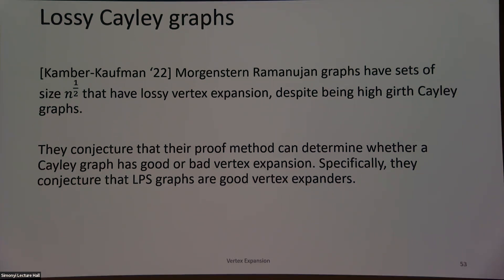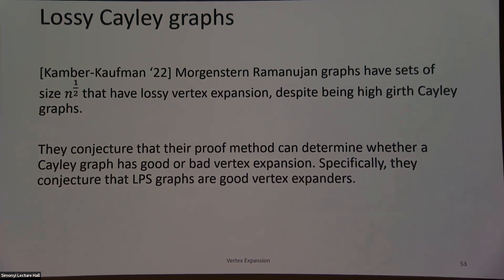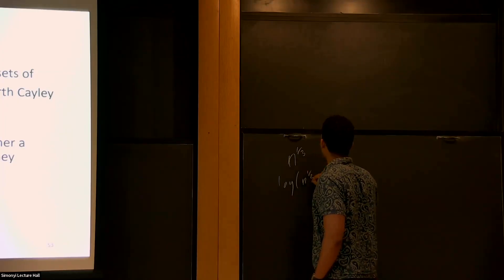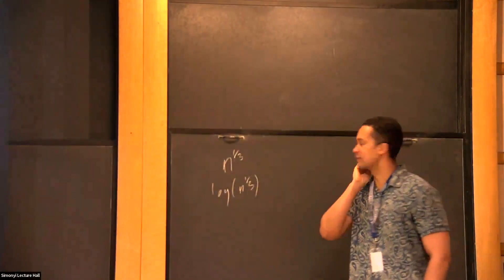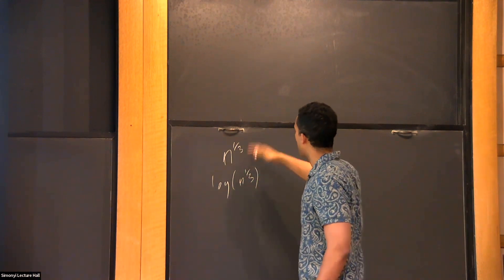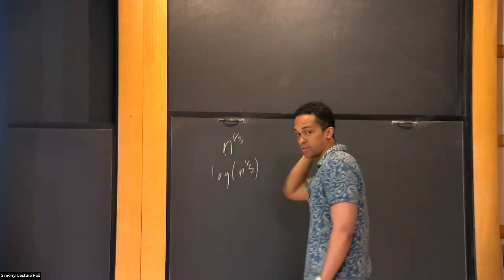That's the end of the first part of my talk. Can you say something more about how the girth stays high if the gadget is much smaller? The gadget will be about size N^{1/3}. If I can come up with a graph of high girth — any graph of high girth — then the girth contribution will just be log(N^{1/3}). In fact that's like polynomial, and we can do it with a polynomial-size set, which is fine.